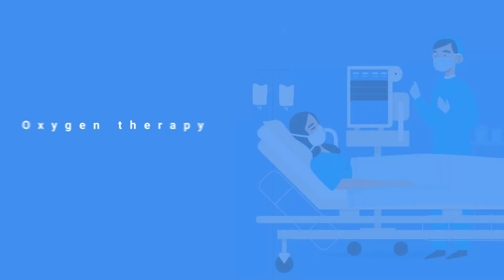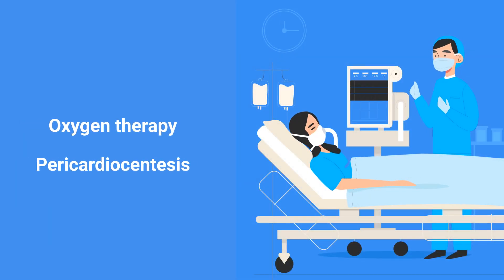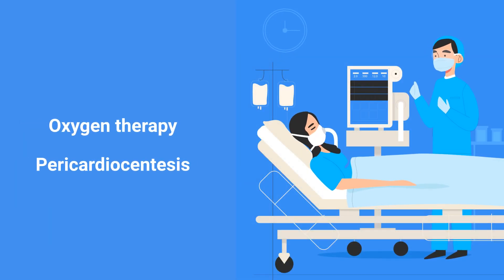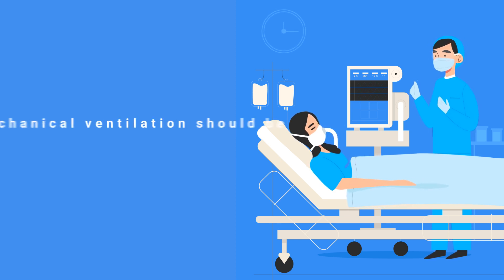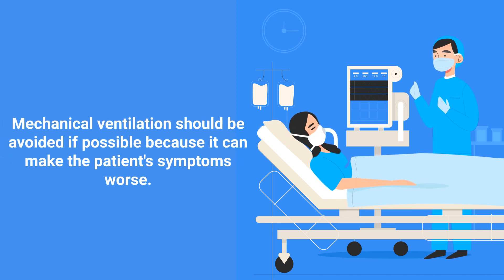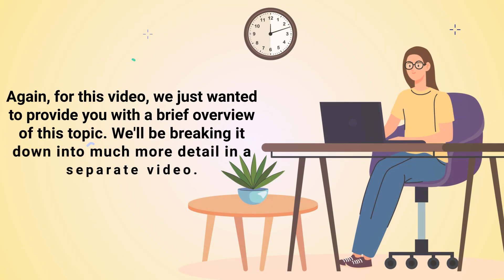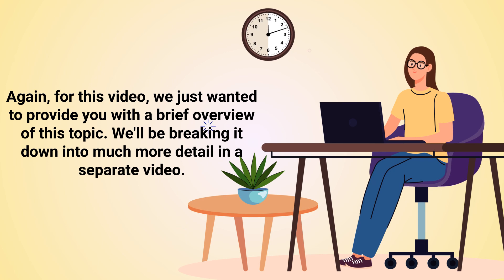The treatment methods for cardiac tamponade will vary depending on the patient's condition. However, some common examples include oxygen therapy for hypoxemia and a pericardiocentesis in order to drain fluid away from the heart. Mechanical ventilation should be avoided if possible, because it can make the patient's symptoms worse.